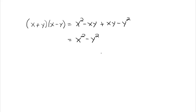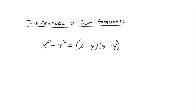We're talking about factoring, so we want to take an expression such as x squared minus y squared and write it as a product of factors. Anything of the form x squared minus y squared will factor into x plus y times x minus y — working our way backwards. If we know that x plus y times x minus y equals x squared minus y squared, then x squared minus y squared has no choice but to equal x plus y times x minus y. That is our difference of two squares formula.